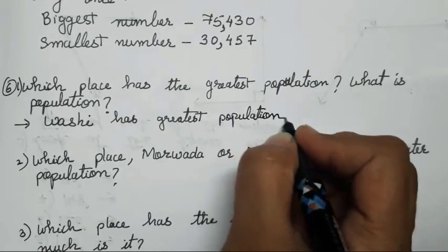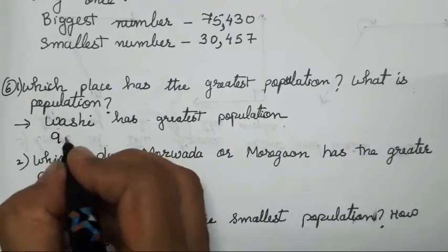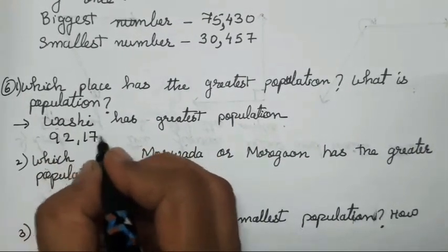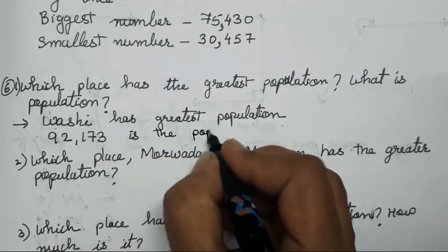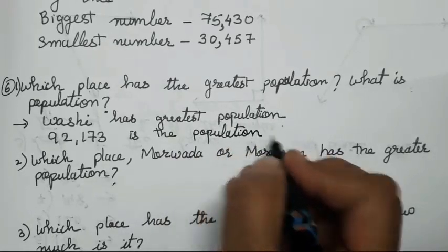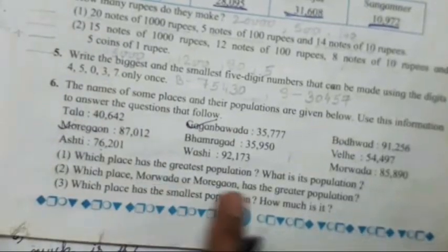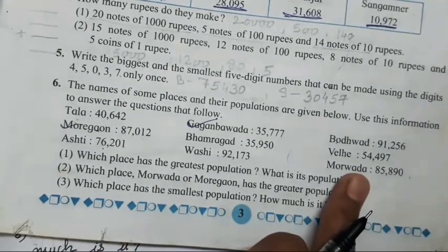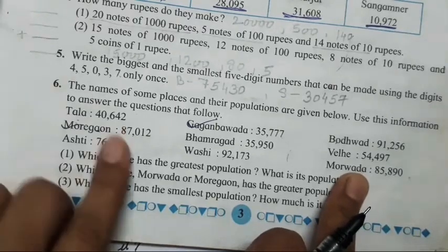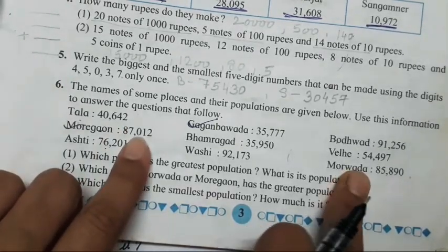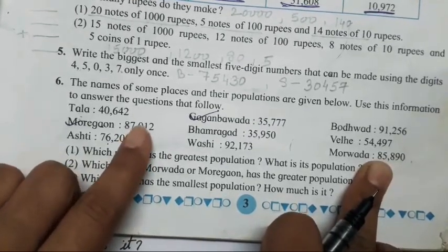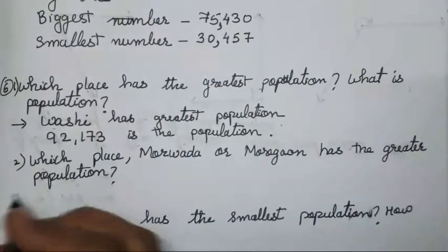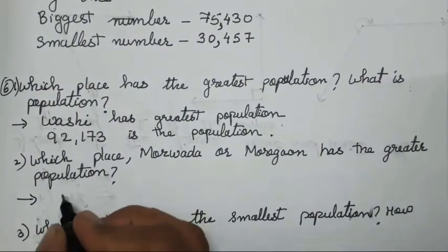Washi has the greatest population and its population is 92,173. Now the next question: which place — Morwada or Moregaon — has the greater population? Morwada and Moregaon are both given. Which is greater — 87 or 85? Obviously 87 is the greater one, so Moregaon has the greater population.